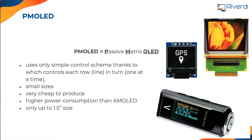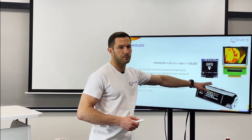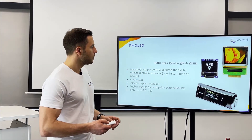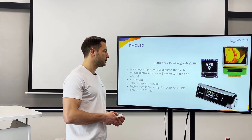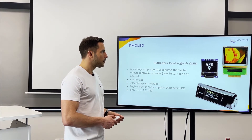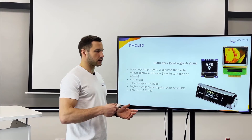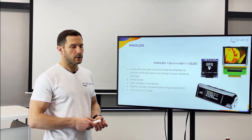Now we know some advantages, disadvantages, and how to use the OLED display. Let's talk about two main types of OLEDs. The first one is a PMOLED, which is a passive matrix OLED display, very similar to STN monochrome displays. We don't have transistors in the matrix — we just have light-emitting pixels connected to the matrix that powers the pixels.